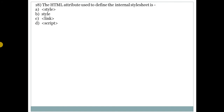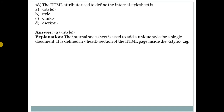Question 18: the HTML attribute used to define the internal stylesheet? Answer is A — the style tag or element. The internal stylesheet is used to add a unique style for a single document. It is defined in the head section of the HTML page inside the style tag.